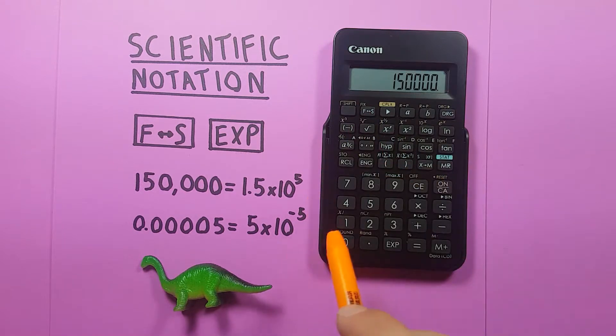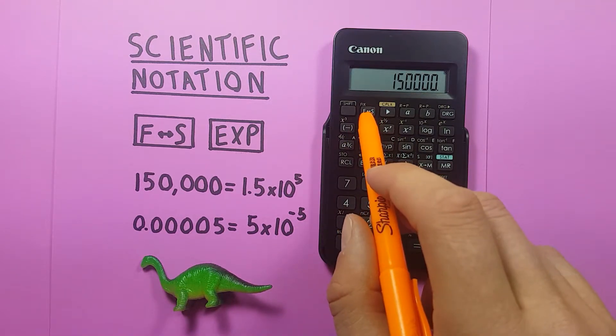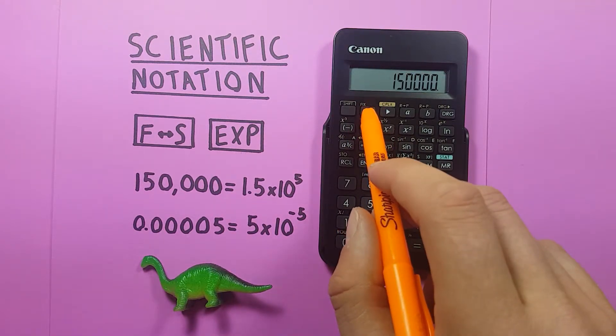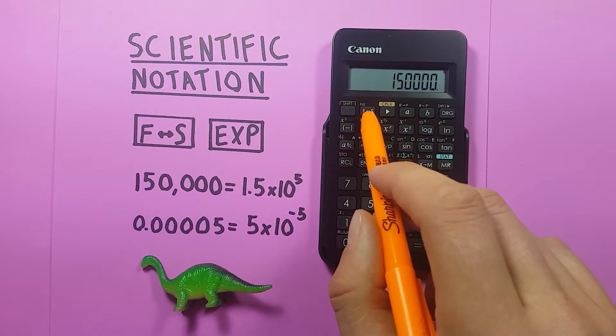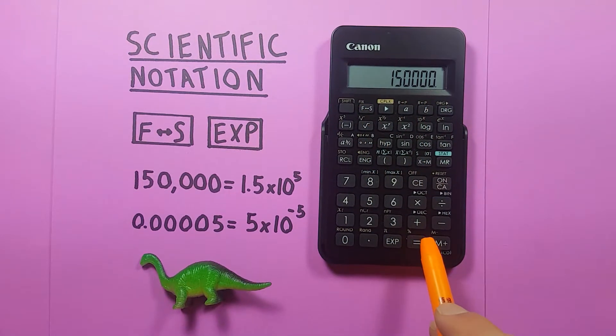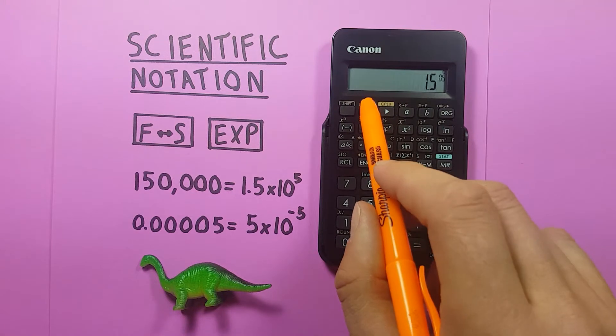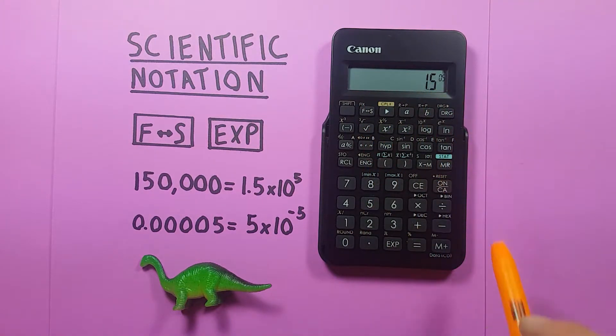Then press this F2S key, but it won't work if we just press it now. What you have to do is press the equals first and then press F2S, and there you see it's converted to 1.5 times 10 to the power of 5.